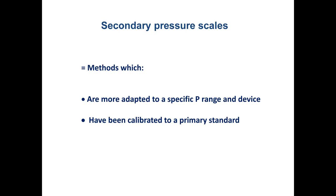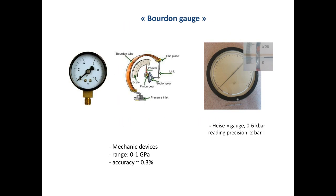All of the pressure gauges you will use in your future career are secondary pressure gauges. The simplest one — you know it from home probably — is the famous Bourdon gauge. When you go into the lab, it's often the first thing you see. Inside there is a tube in the form of a hemicircle, and it's hollow. You inject pressure inside and it deforms. This deformation is picked up by a mechanical mechanism and transferred to a pointer, which gives you the pressure once calibrated.